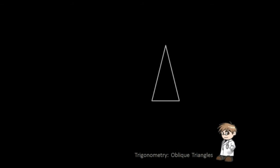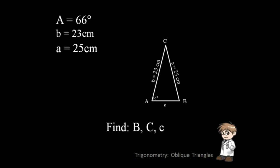You have been given angle A, side B, and side A. To solve this triangle, you have to determine the third side and the unknown angles.